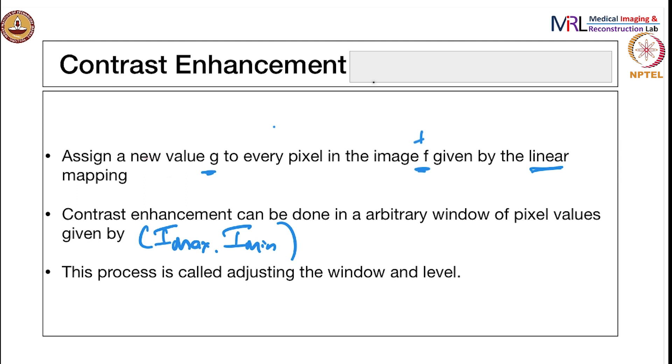This process is also called adjusting the window and level, primarily because you can choose a level L and from there you can go w/2 to the right, w/2 to the left, which means you will be mapping between L minus w/2 to L plus w/2.